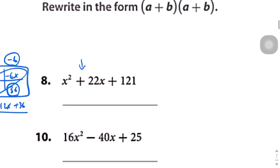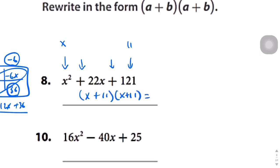This one has two pluses, so it fits the example much better. The square root of x squared is just x, the square root of 121 is 11. So what we end up with is x plus 11 times x plus 11, which you can rewrite as x plus 11 squared, since you have two of them. That one fits the example much better.